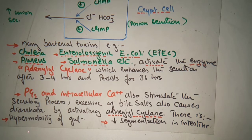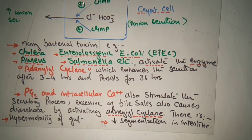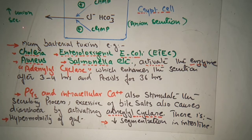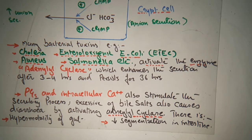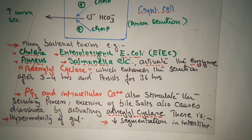Excessive bile salts also cause diarrhea by activating the enzyme adenylyl cyclase, leading to hypermotility of the gut. The mechanism is: first, there is decreased absorption of sodium and chloride; second, there is an increase in anionic concentration. Due to the action of these bacteria, adenylyl cyclase is activated, causing increased formation and passage of loose stool. Prostaglandins and intracellular calcium ions also stimulate the secretory processes. Excessive bile salts cause diarrhea by activating adenylyl cyclase, leading to hypermotility and decreased segmentation of the intestine.